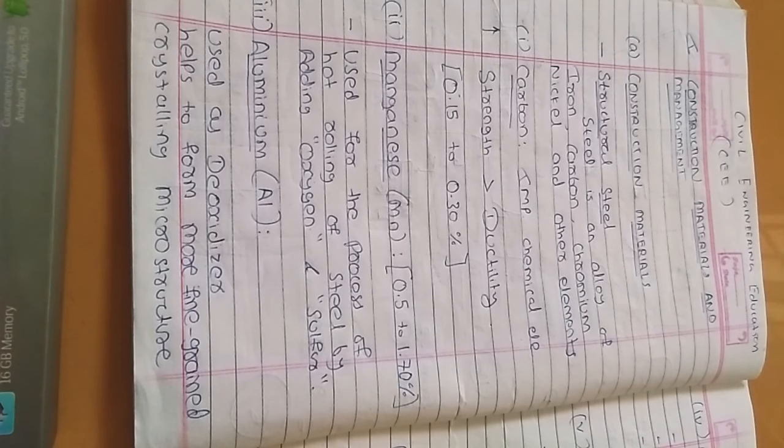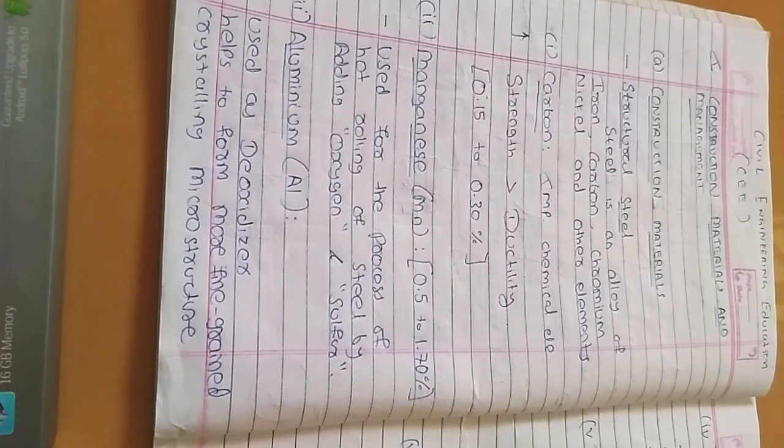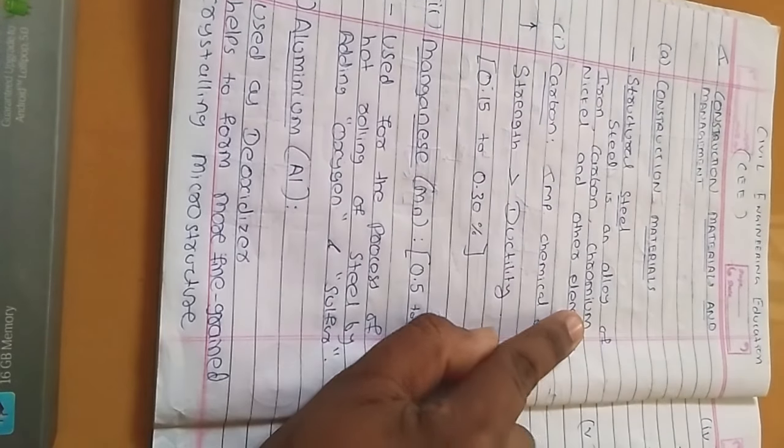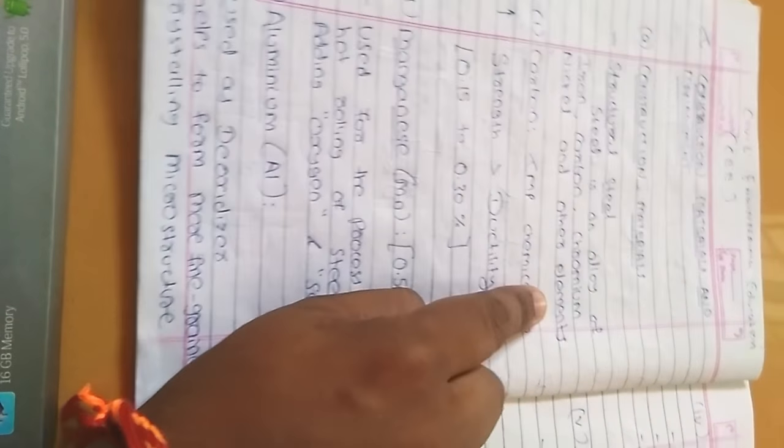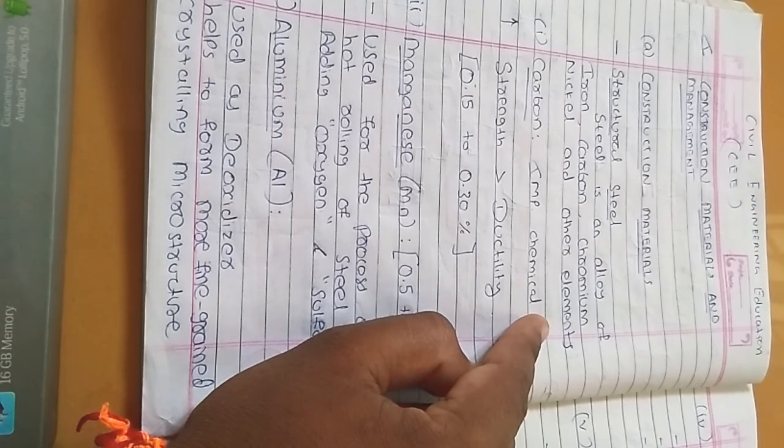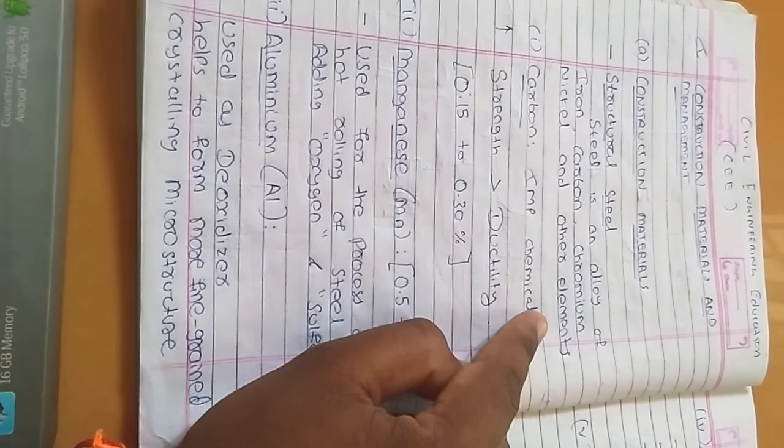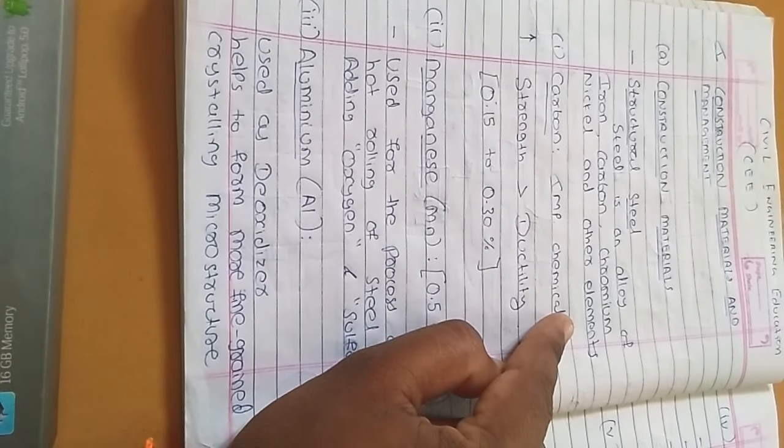So construction material, we will see the first content of steel structures. First, structural steel. Steel is an alloy of iron, carbon, chromium, nickel and other elements. We use steel but you have never thought what are their contents, right? So here I am revealing the contents which are used in different percentages according to their uses.